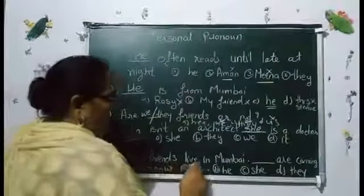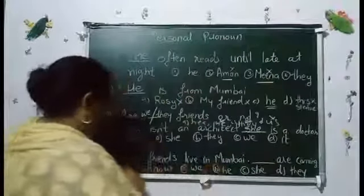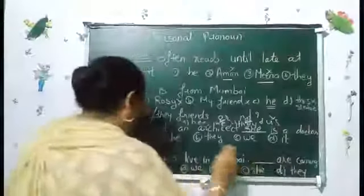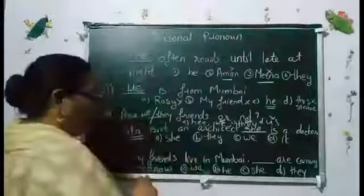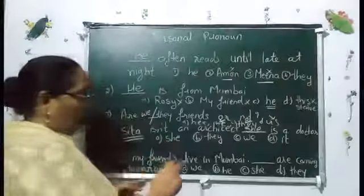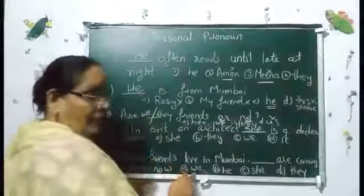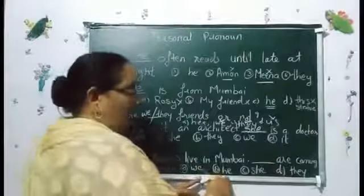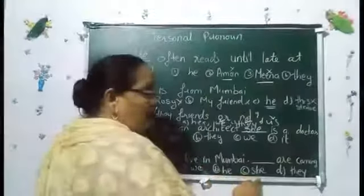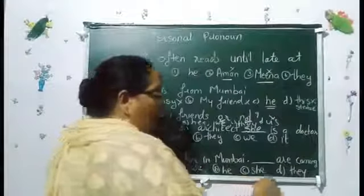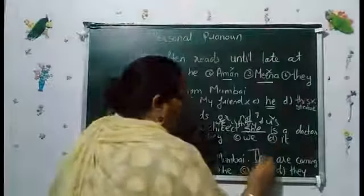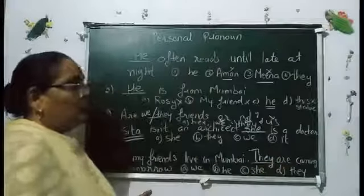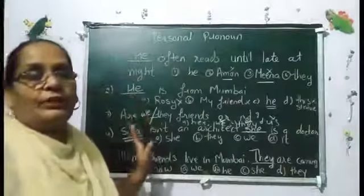All my friends live in Mumbai. Blank are coming tomorrow. Since it refers to many friends — 'we' coming? No. 'He' is singular. 'She' is also singular. So here we use 'they' — They are coming tomorrow.